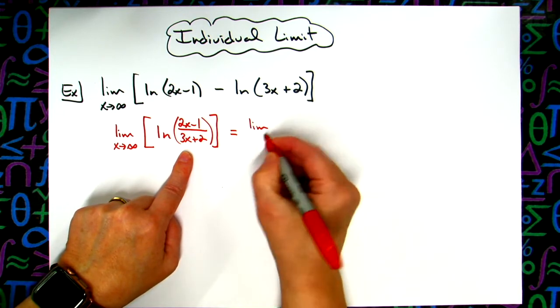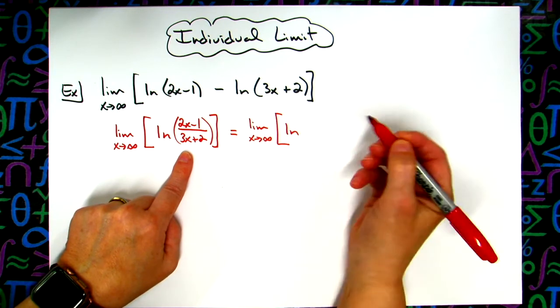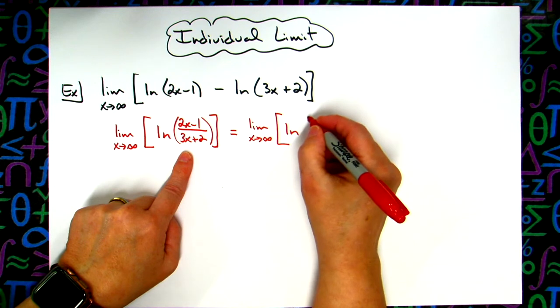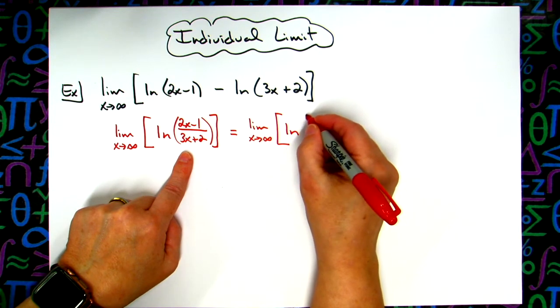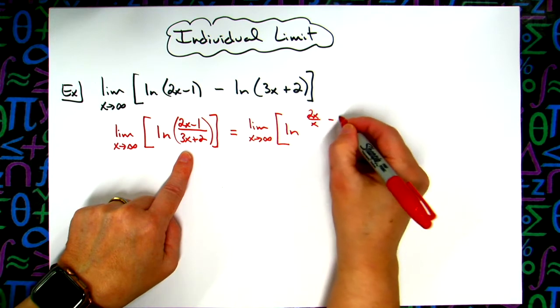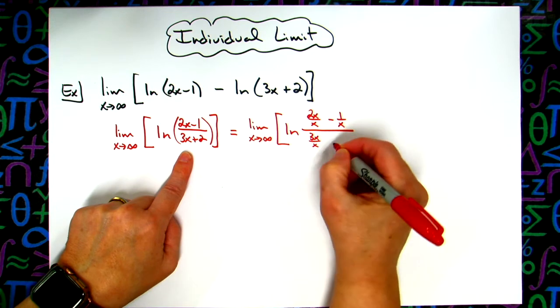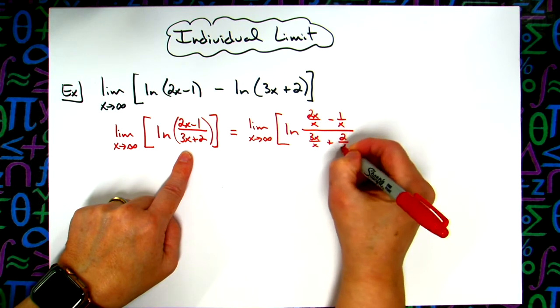Alright, so I've got the limit as x approaches infinity. I'll have the natural log still out here in front. Dividing through by the highest power of x from the denominator will be 2x over x minus 1 over x, all over 3x over x plus 2 over x.